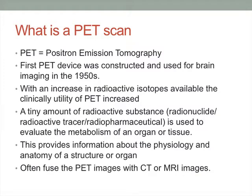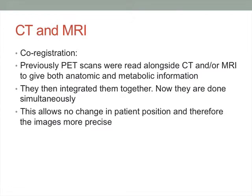PET scan stands for positron emission tomography, and the first PET device was used in the 1950s for brain imaging. With an increase in radioactive isotopes available, the clinical utility of PET has increased over the years. A tiny amount of radioactive substance — a radionuclide, radioactive tracer, or radiopharmaceutical — is used to evaluate the metabolism of an organ or tissue of interest, providing information about physiology and anatomy. These days it is standard to fuse PET with CT, and more commonly MRI — called co-registration — allowing simultaneous imaging with no change in patient position, making images more precise.